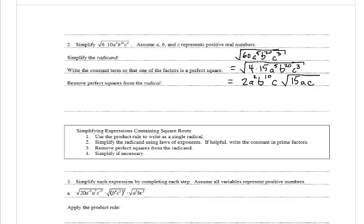Now it covers simplifying expressions containing square roots. Step 1: use the product rule to write as a single radical. Step 2: simplify the radicand using laws of exponents — if helpful, write the constant in prime factors. Step 3: remove perfect squares from the radicand, then simplify if necessary.